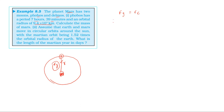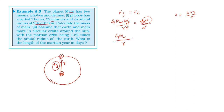The gravitational force is equal to the centripetal force. The gravitational force involves the mass of Mars. The orbital speed of Phobos equals the circumference of the orbit divided by the time period T, which is 2πR/T. So v² = 4π²R²/T².